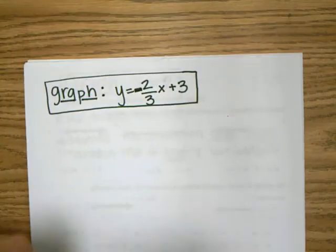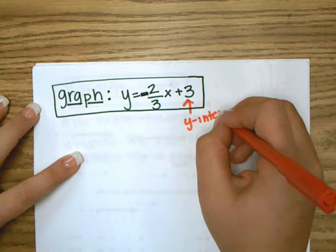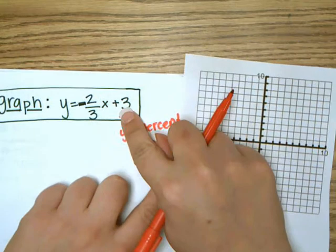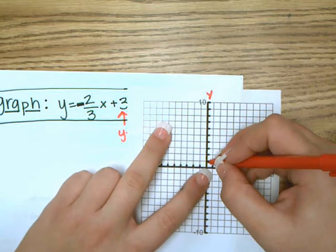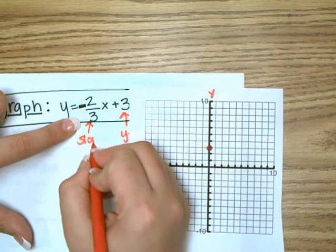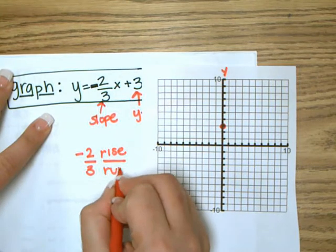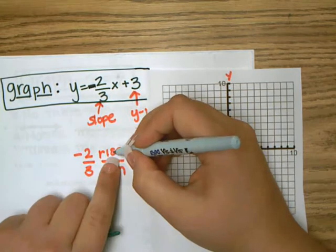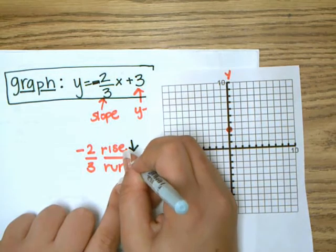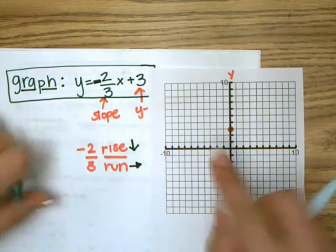Let's go ahead and try another one using slope-intercept form. This tells us the y-intercept. Also notice it's in slope-intercept form — the y is by itself. So this positive three tells us on the y-axis we're going to start at three. This number is the slope, and we're going to label it rise over run. If your slope is negative, that means our rise is going to go down two, and we always go to the right side because the negative we always put with the top number.